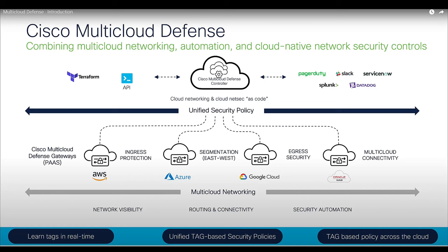Let me double-click on Cisco Multi-Cloud Defense architecture. We have a Controller controlling everything in the architecture, and the other component is known as the Gateway. Gateways are deployed in your account and are owned and managed by the Controller. The Controller is a SaaS-based offering available globally. It controls the deployment and provides you visibility of your entire network by onboarding your account into the Controller, then enabling visibility by sending VPC flow logs, NSG flow logs, or DNS query logs.